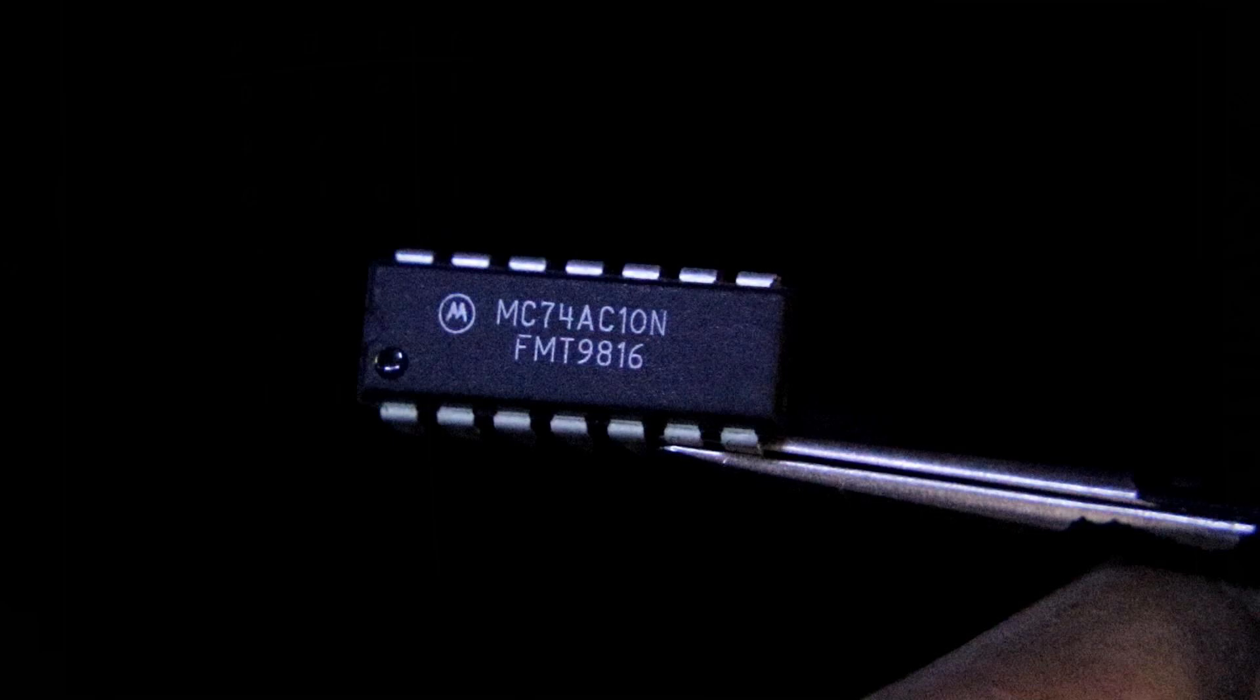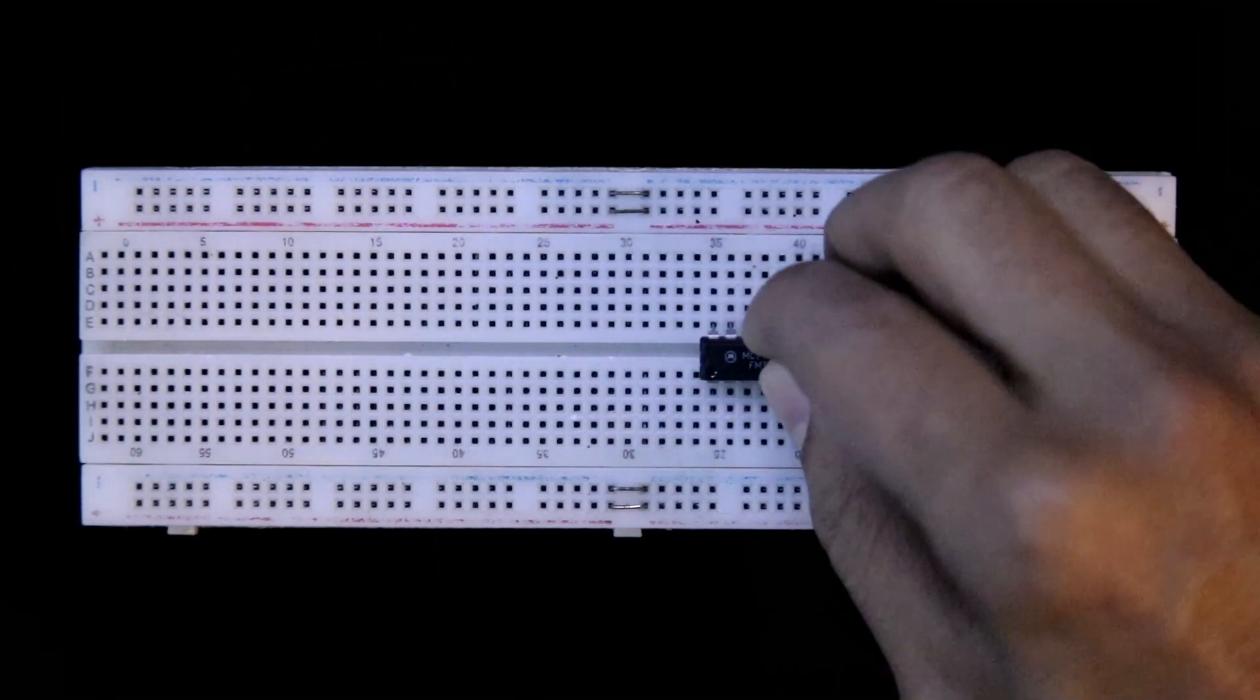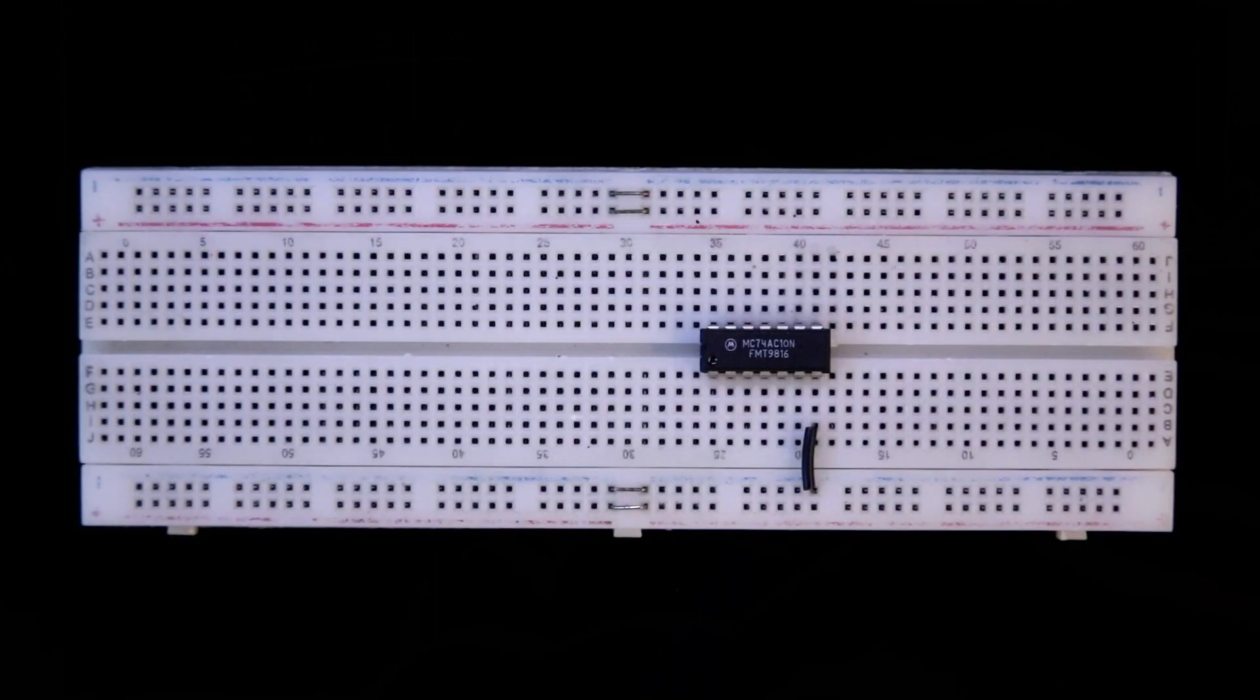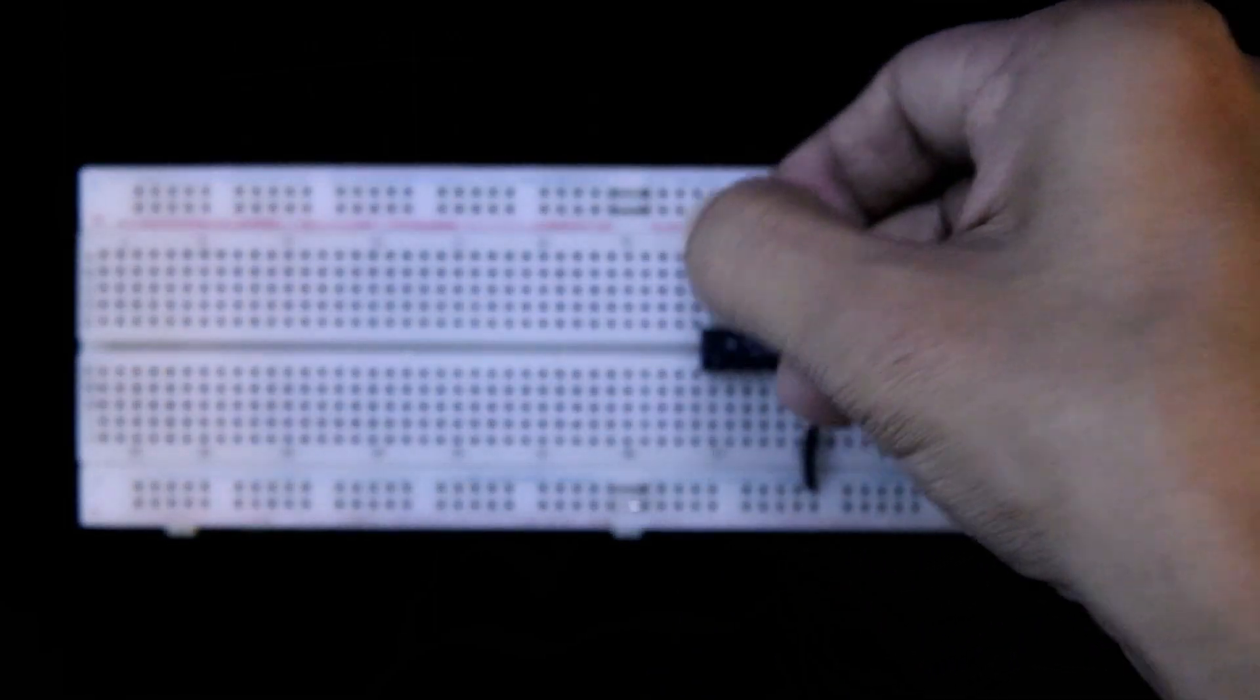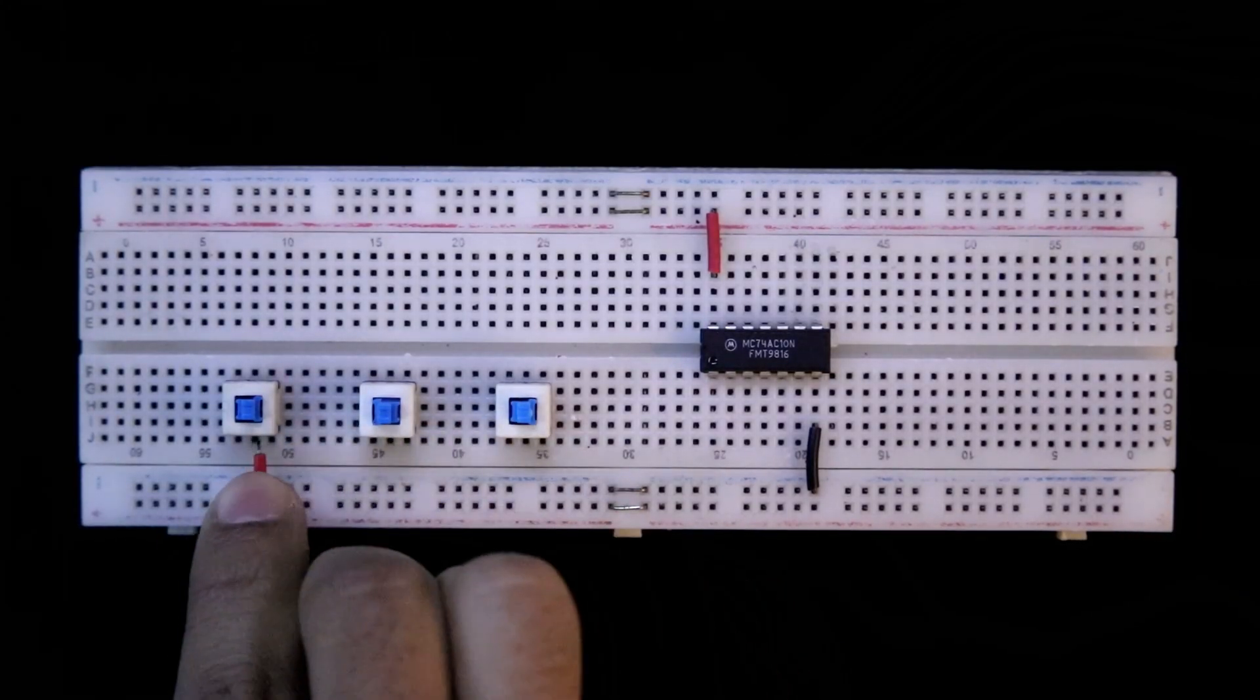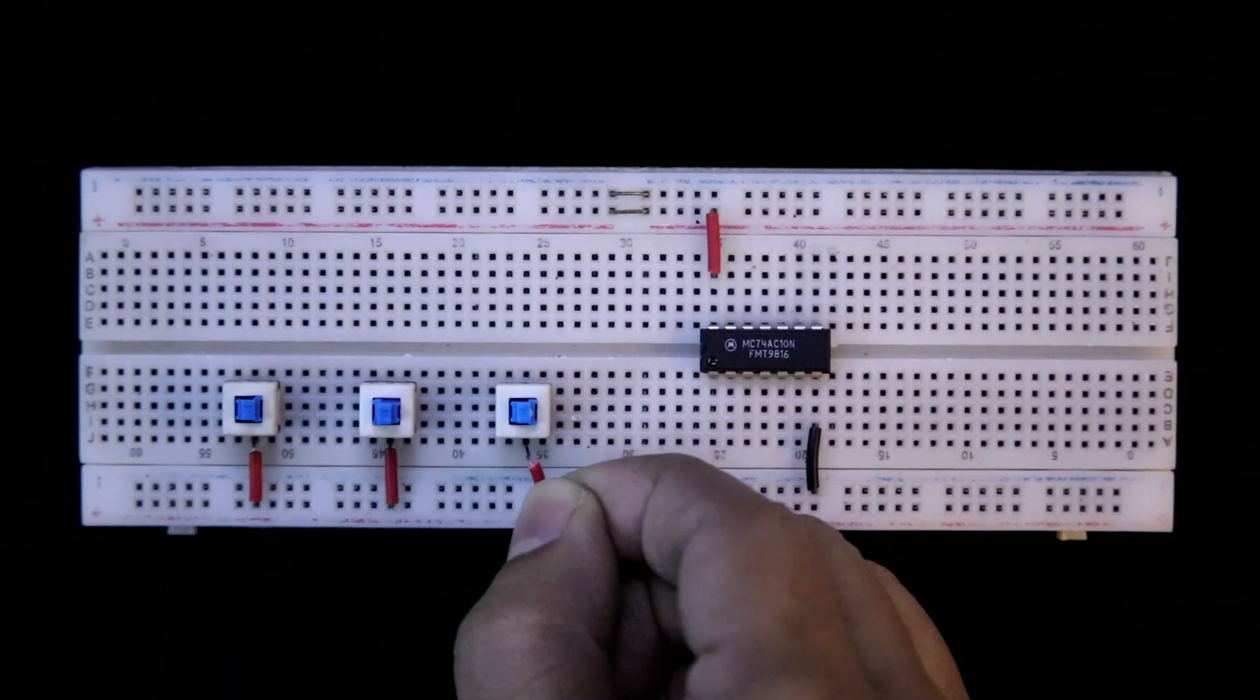7410, I am putting it here. Pin 7 is connected to the ground and pin 14 is connected to the plus VCC. Switch A, B and C. One pin of the switch is connected to the plus 5 volt.